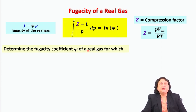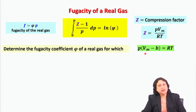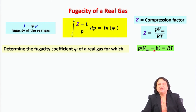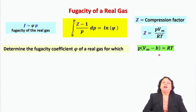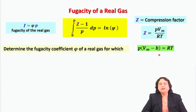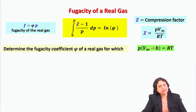Moving ahead, let us take a problem where we find the fugacity coefficient of a real gas for which it has been experimentally established that this gas obeys the equation of state p(Vm − b) = RT, where Vm is the molar volume corrected by a small characteristic constant b of the gas. In ideal gases, molecules are assumed to be point particles with vanishing volume, but in real gases they have finite volume, which is reflected as the correction b to the molar volume.